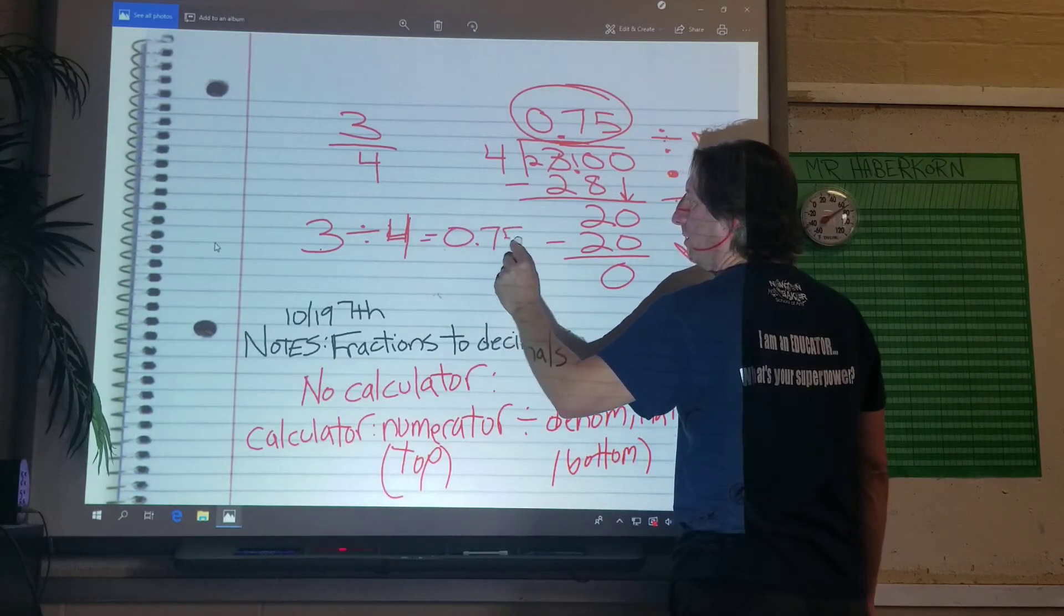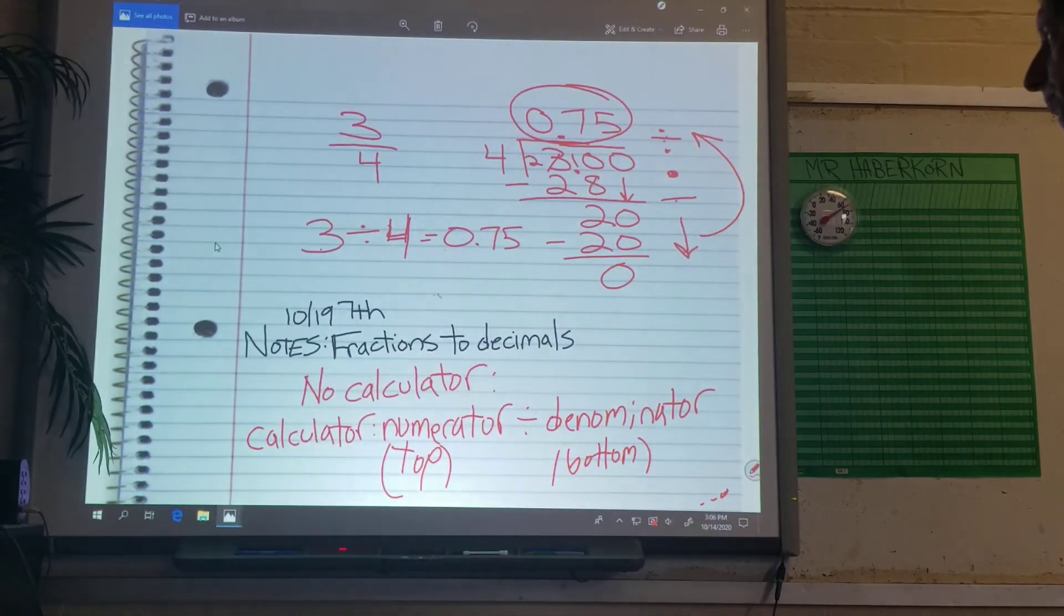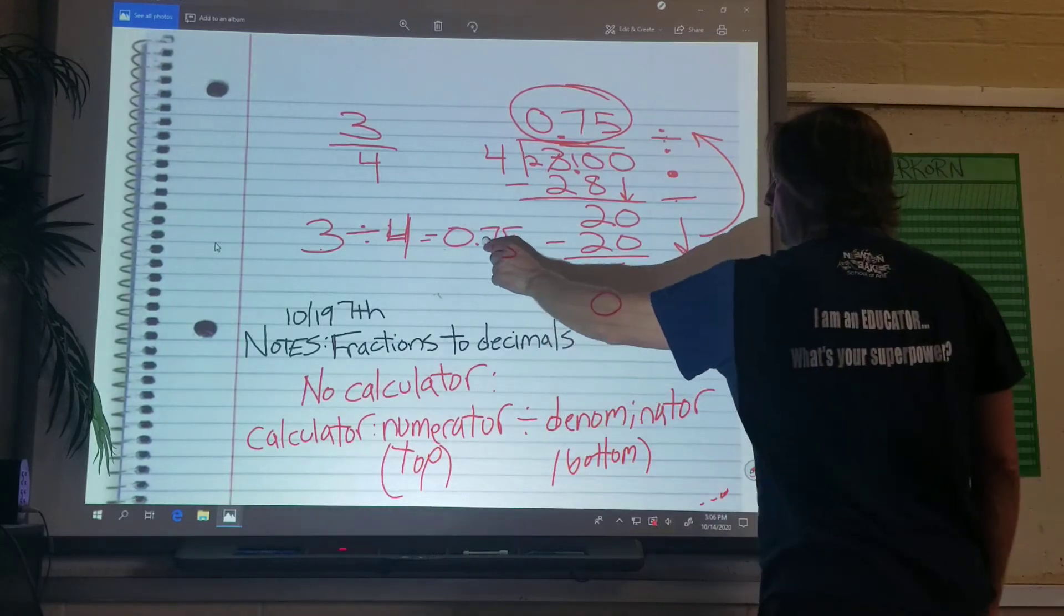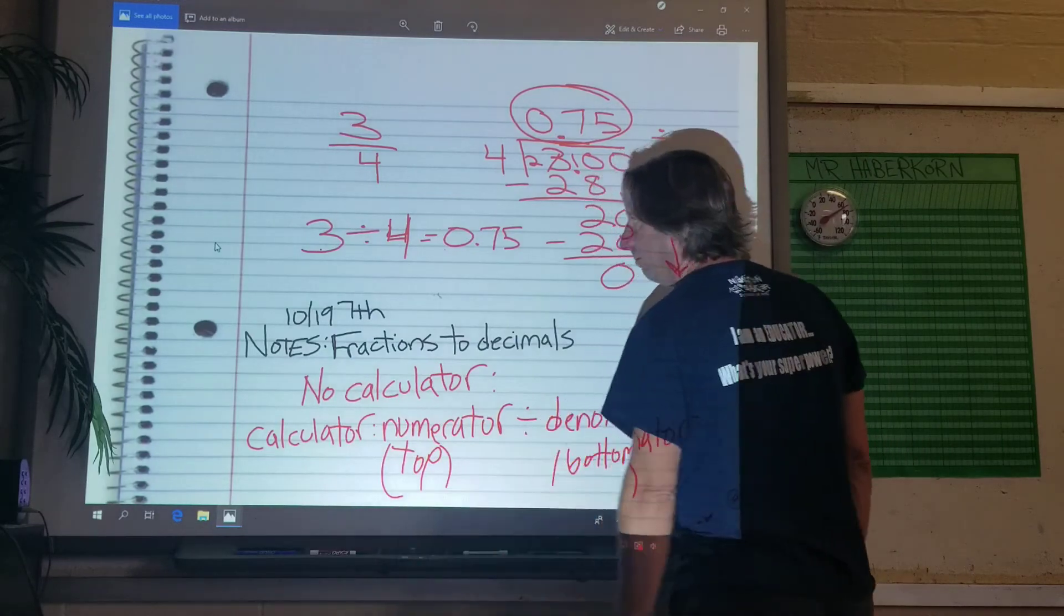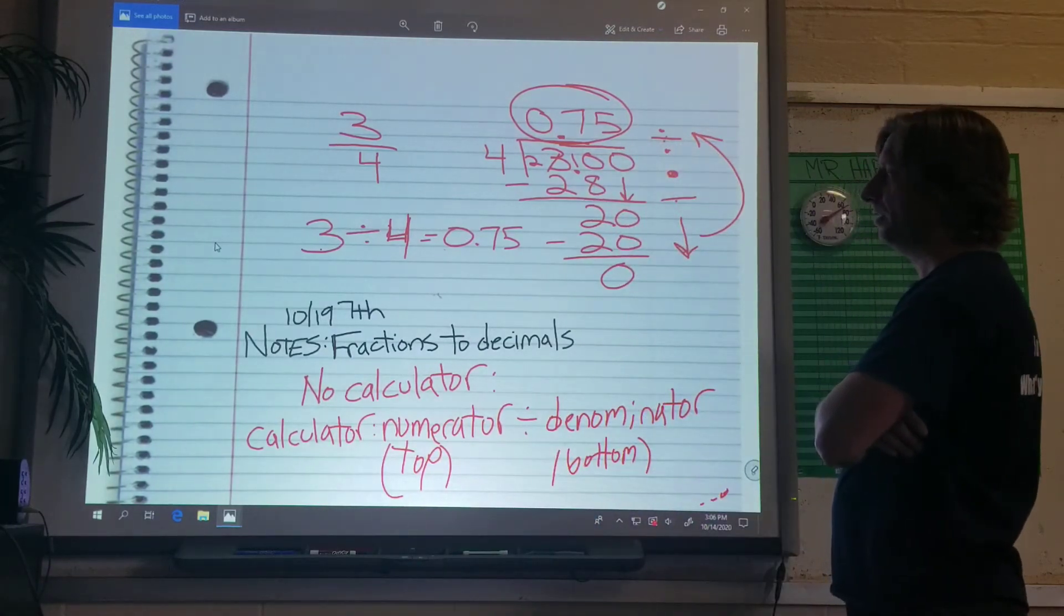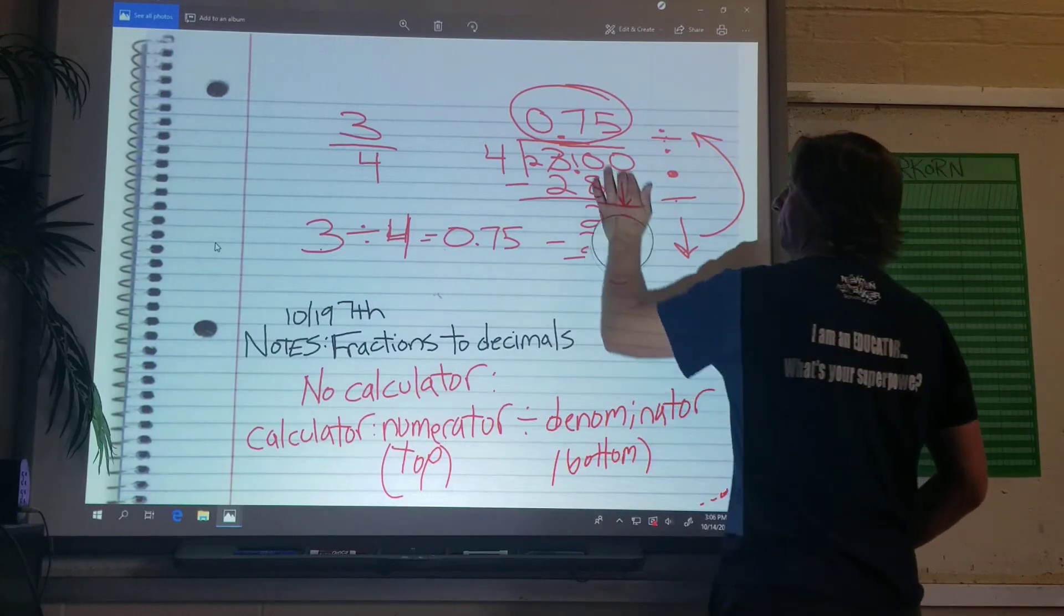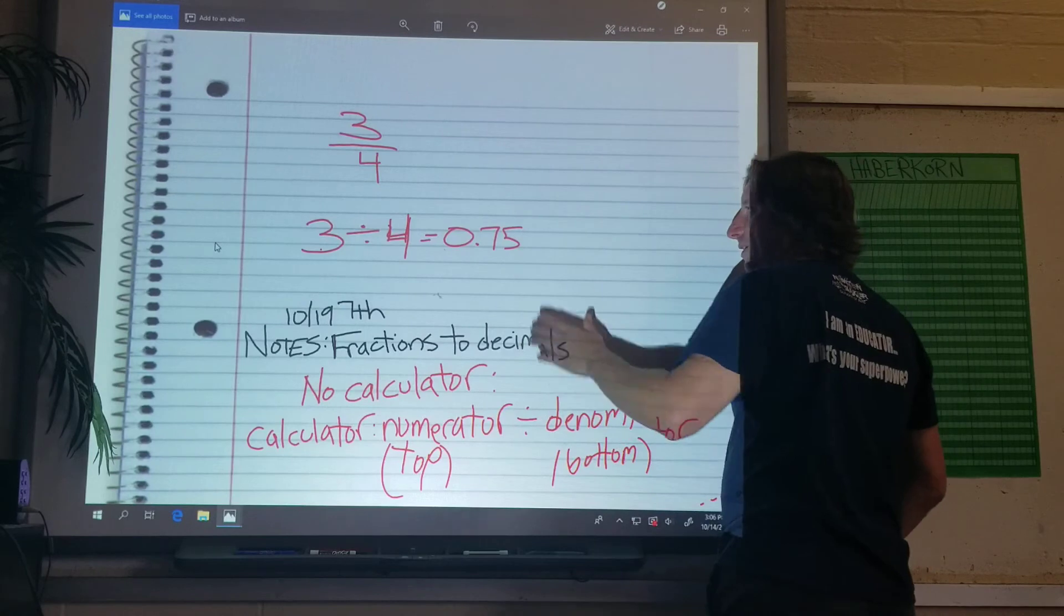Now, if you would type this into the calculator, you'd get zero point seven five. Oh, what if I wanted that as a percent? We'll move the point over two places, seventy-five percent, right? Okay. So that's how we do those. Convert a fraction into a decimal. We'll do one more together. See if we can do it, okay?